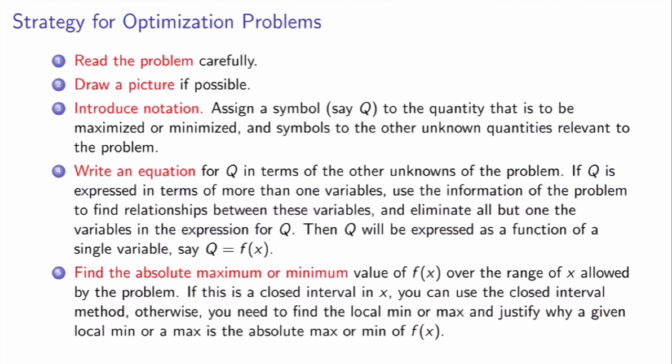Finally, step 5: find the absolute max or min of the function over the domain allowed by the problem. If the domain is a closed interval, you can use the closed interval method. If not, you need to find the critical numbers, find local min and max, and justify why they are absolute min or max of the function over the domain.